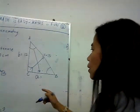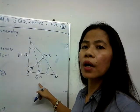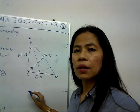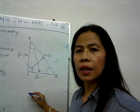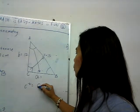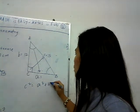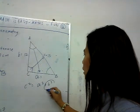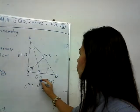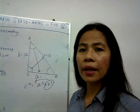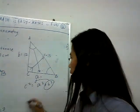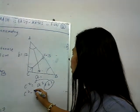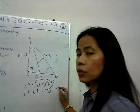We are looking for side A. Earlier we solved for C using C squared equals A squared plus B squared. But this time we are looking for A squared, so we transfer B squared to the other side and do the opposite of plus, which is minus. Our equation is now A squared equals C squared minus B squared.